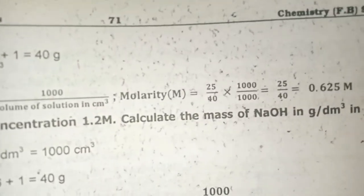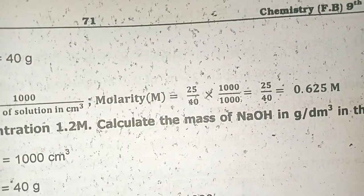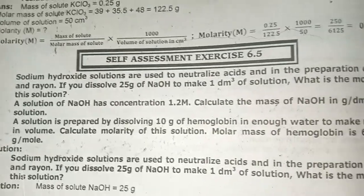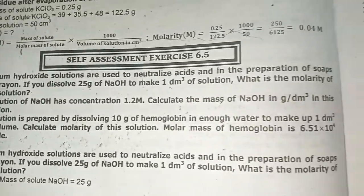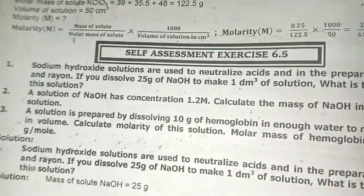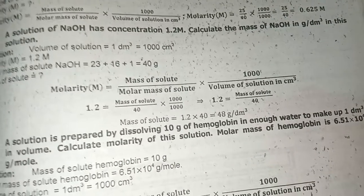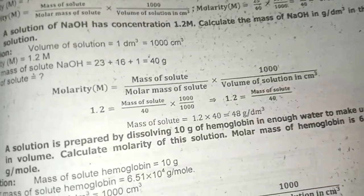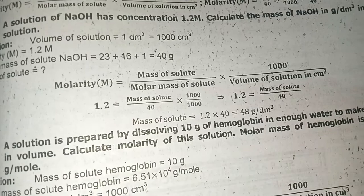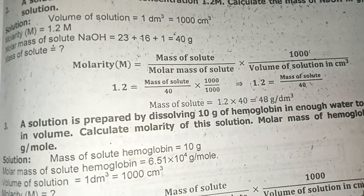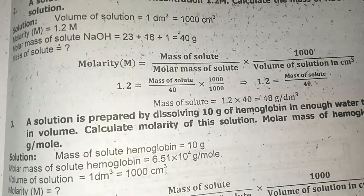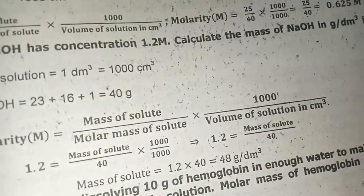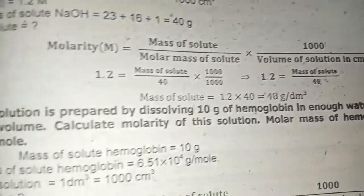In question two, molarity is given and we have to find the mass. Volume is in dm³. What we did: first we converted volume from 1 dm³ to 1000 cm³, then we found the mass of solute in grams, and then applied the molarity formula.